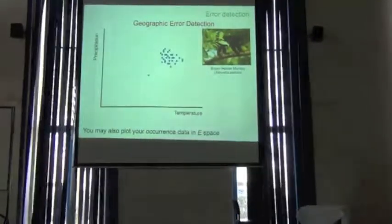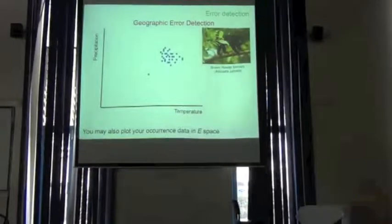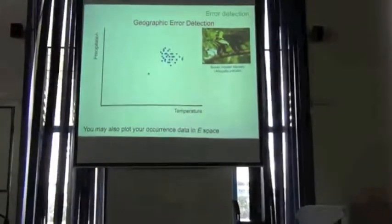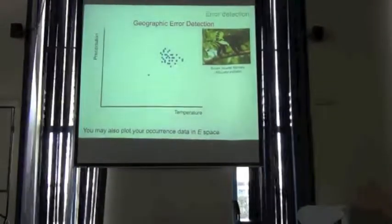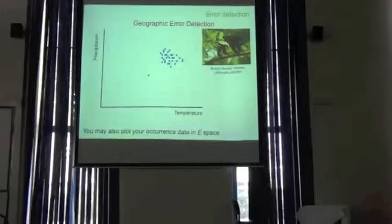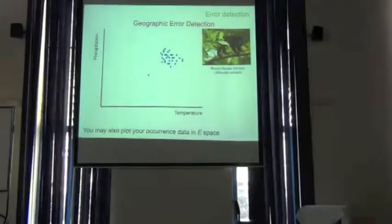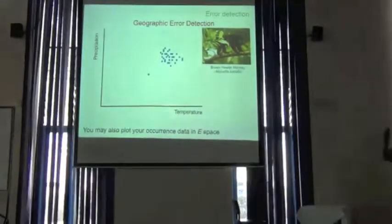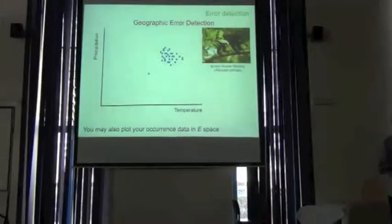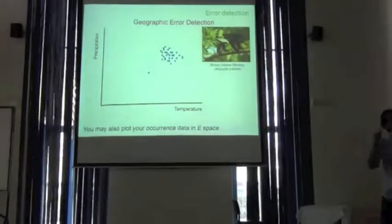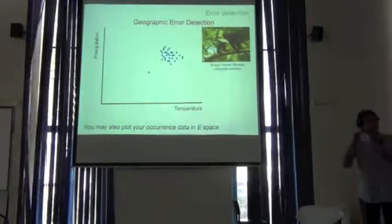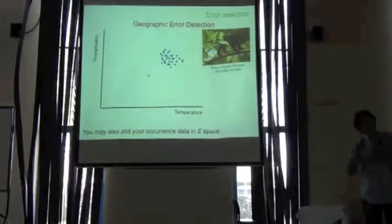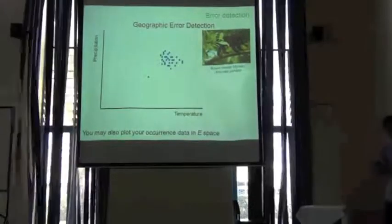You can also plot your data in environmental space and see if they have consistency. If you see outliers, you have to go back to the original record of those outliers and check if they are correct or not.